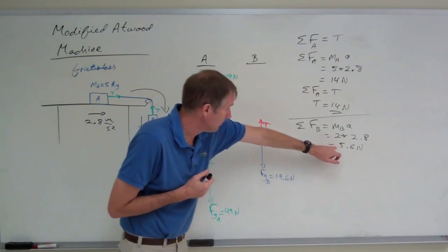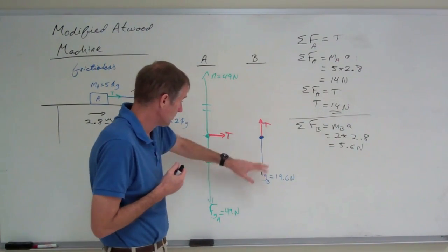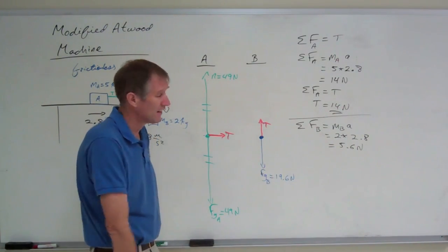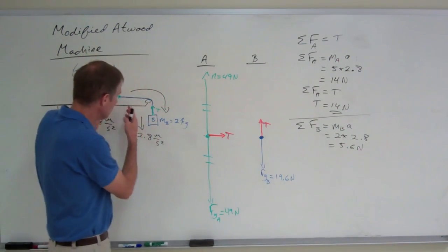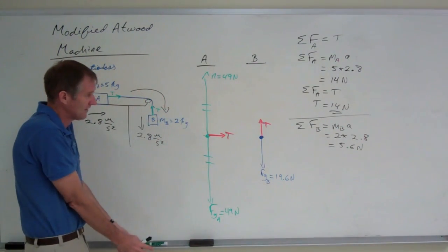Well, because that's positive, you have to do the larger force minus the smaller force. Well, how do you know which one's larger? Which way does it accelerate? You know in this kind of situation block B is going to accelerate downwards.